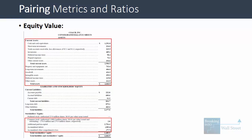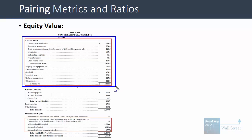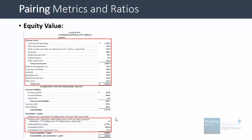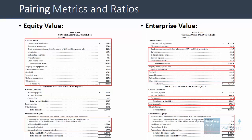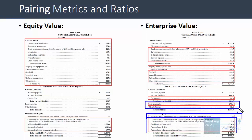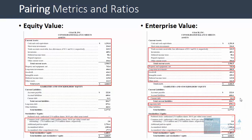Looking at equity value on a company's balance sheet: equity value represents everything on the asset side — including possibly off-balance-sheet assets — and corresponds to just the company's common shareholders' equity on the other side. For enterprise value, you take only selected parts of the asset side: you subtract out cash, short-term investments, long-term investments, and anything else not required to run the core business. On the liabilities side, you start with common shareholders' equity and add preferred stock, long-term debt, short-term debt, and any other investor groups.